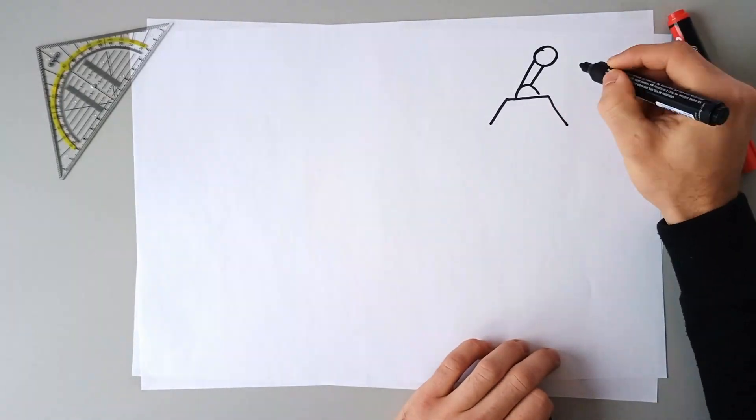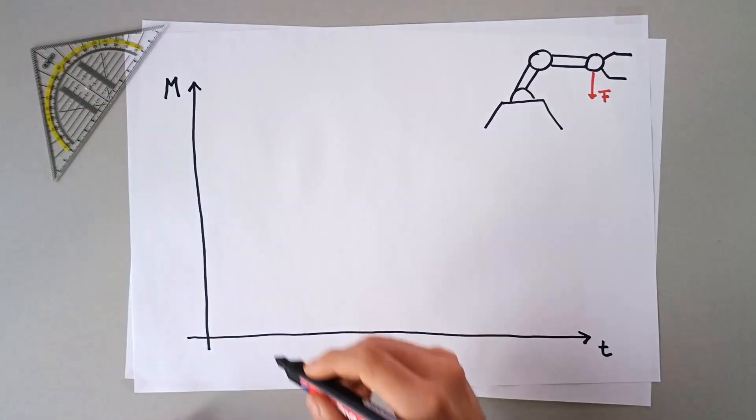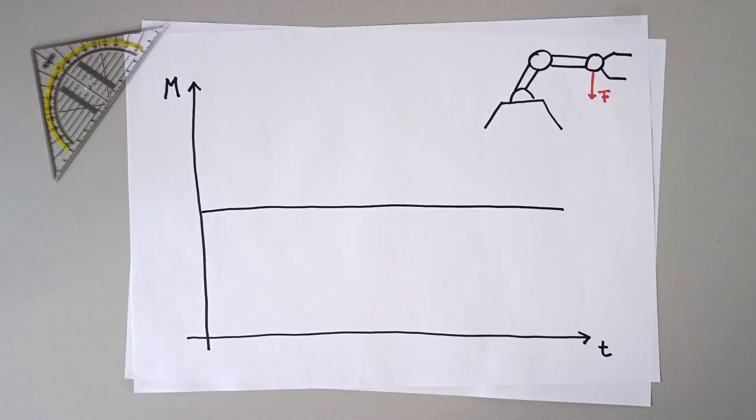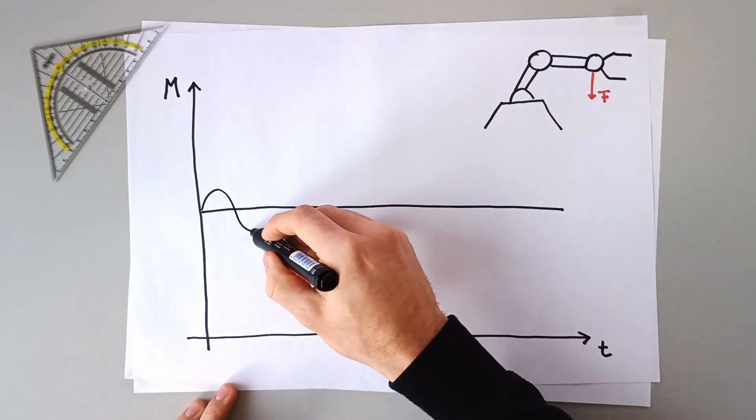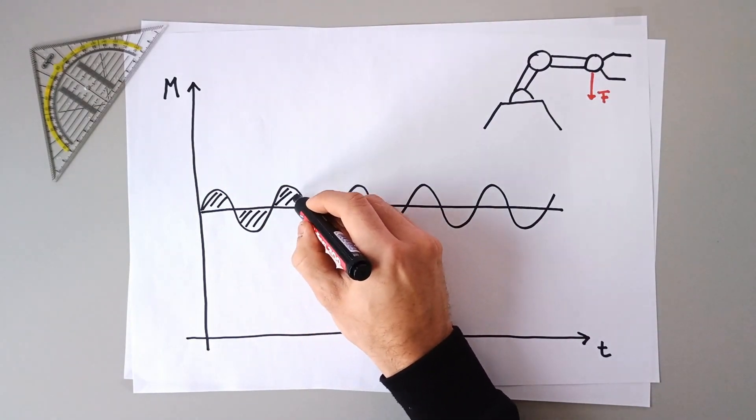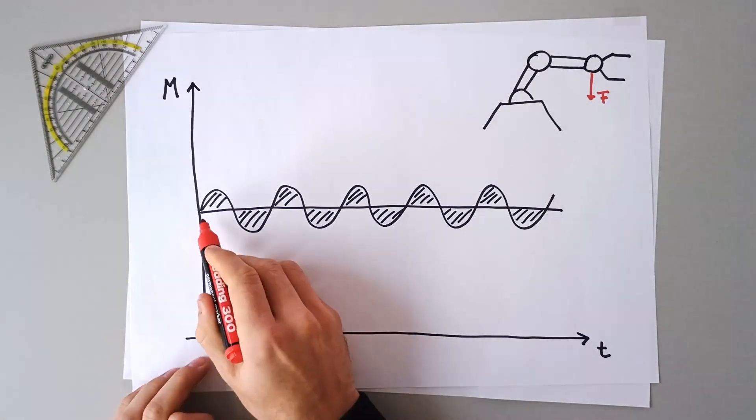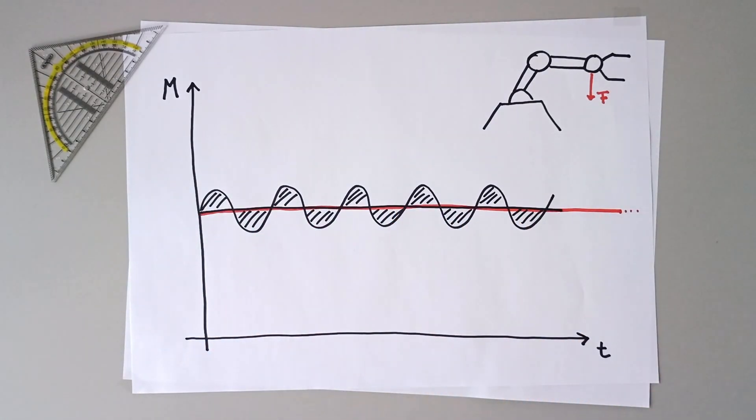At any given position of the robot a certain torque is required to hold this position. If vibrations occur the integrated torque sensor would see something like this. In combination with our high-end control algorithms it is possible to actively control against these vibrations. By the way this is one of the reasons why torque sensors are needed.